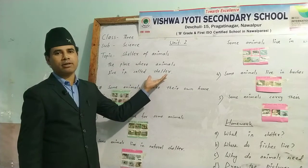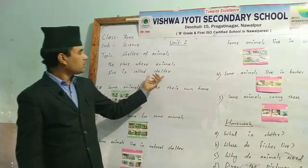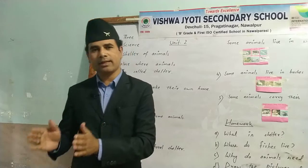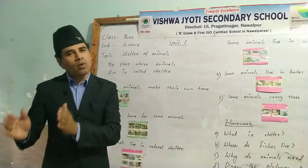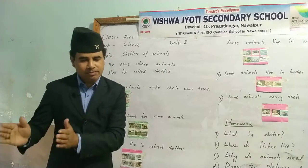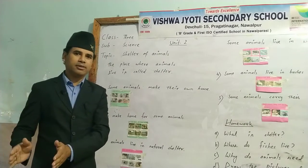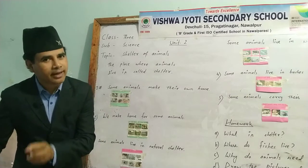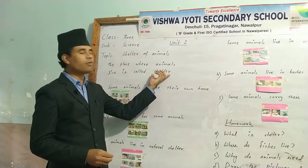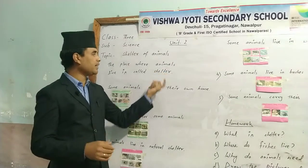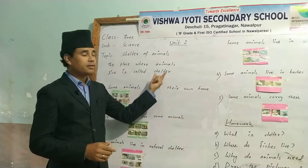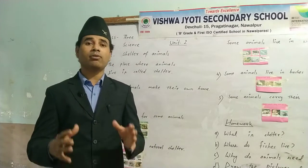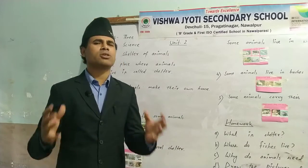Some animals live on land and some animals live inside the water. Animals that live in water are called aquatic animals. Those animals which live on land are called terrestrial animals, and they live in a shelter. Water is the home of aquatic animals.